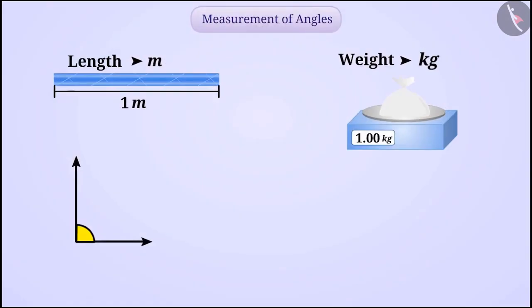Just as we measure length in meters and weight in kilograms, we measure angle in degrees and denote it by this sign. For example, the measurement of this angle is 90 degrees and is expressed as 90°.